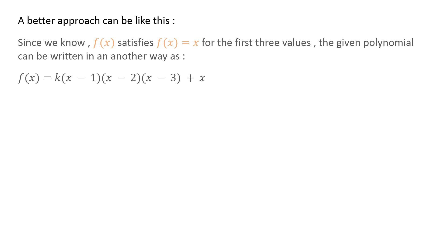But there is a better approach to find the cubic polynomial that approximates f of x. Since we know f of x satisfies f of x equals x for the first three values, the given polynomial can be written as f of x equals k times x minus 1, times x minus 2, times x minus 3, plus x. This way, there is only one unknown coefficient, which is k.